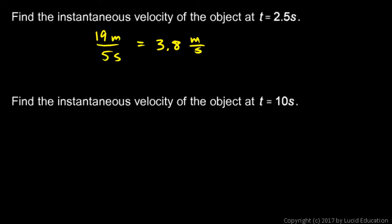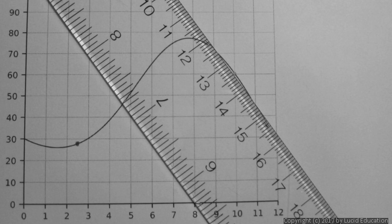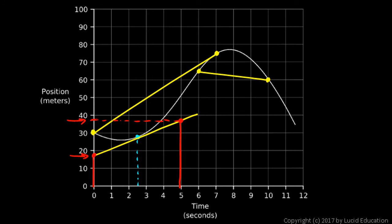The last question: find the instantaneous velocity at t equals 10 seconds. At 10 seconds, that's this point on the graph. We draw a tangent line there by placing the ruler so you see approximately the same amount of graph exposed on each side of that point, which helps you line the ruler up tangent to the graph.